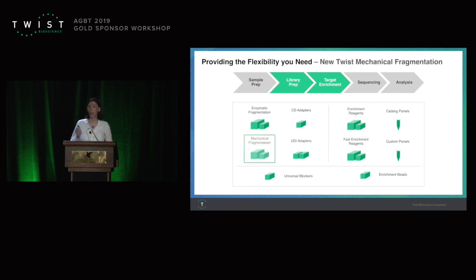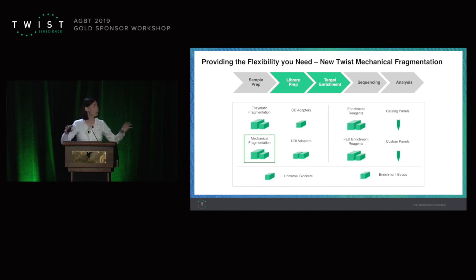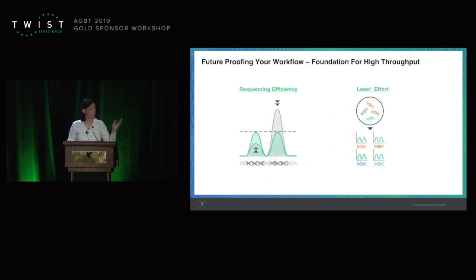We are also adding a mechanical fragmentation kit. If you're interested in using a covaris, maybe for FFPE samples, we have that kit as well. The idea is we already had great sequencing efficiency, and now we are adding to the workflow to enable you to get that efficiency with the least effort possible — saving you sequencing dollars thanks to efficiency, and saving you effort in the lab.